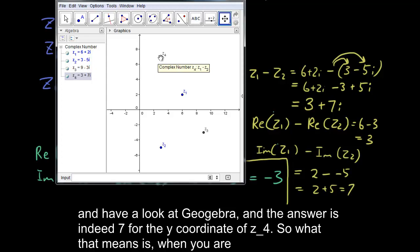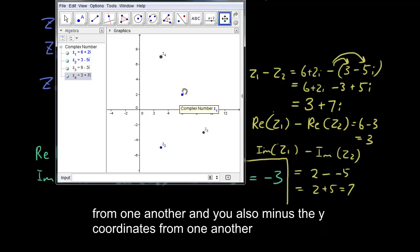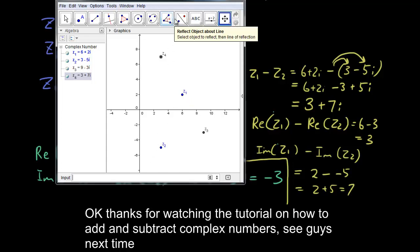So what that means is, when you are taking away or subtracting complex numbers, all you have to do is you minus the x-coordinates from one another, and you also minus the y-coordinates from one another. Okay, thanks for watching the tutorial on how to add and subtract complex numbers. See you guys next time.